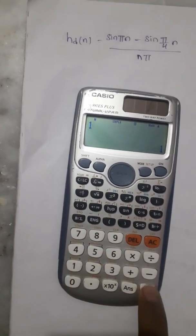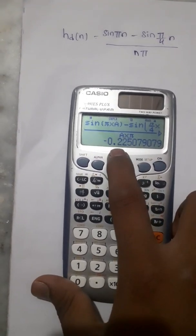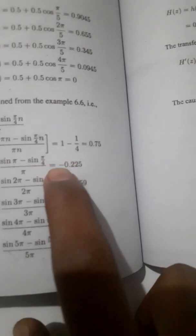Substituting the value 1, we get -0.225, which equals our required value as in the textbook.